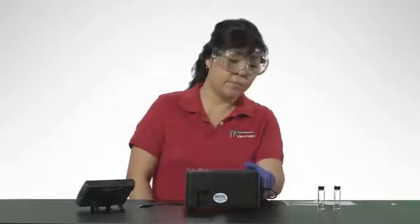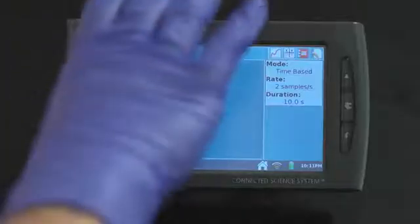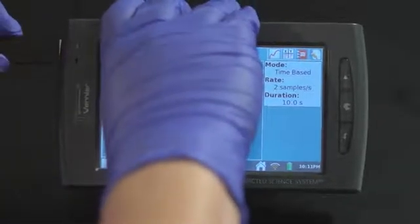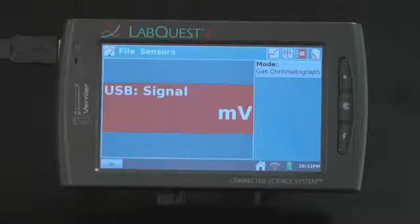Prepare the Mini-GC Plus for data collection. Connect the Mini-GC Plus to an electrical outlet. Turn on the Mini-GC using the on-off switch located on the left side. Connect the USB cable to the USB port of LabQuest. LabQuest will auto-ID the Mini-GC Plus.